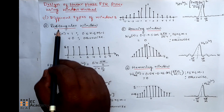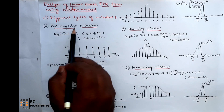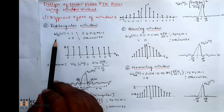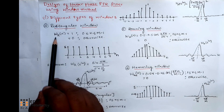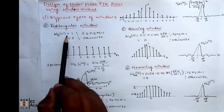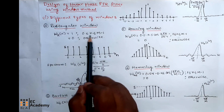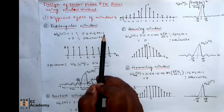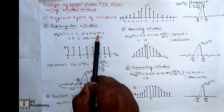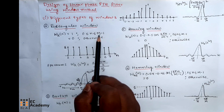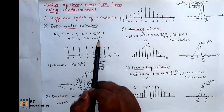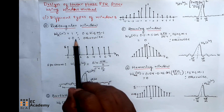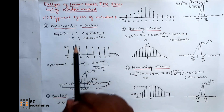The first type of window is the rectangular window. Mathematically, we can represent the rectangular window as WR(N) = 1 for N ranging between 0 to M minus 1, where M represents the order of the filter. For other values of N, this window will be 0.